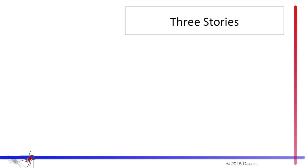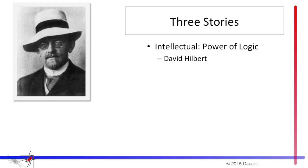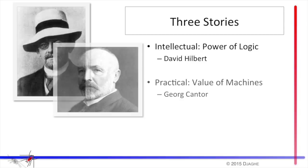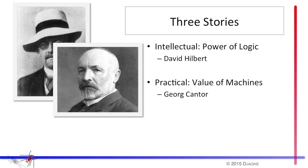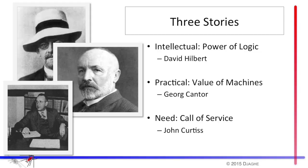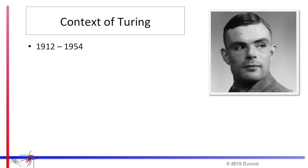The first, the intellectual context, is the power of mathematical logic. And we will look at the story of David Hilbert to understand that. Next, we're going to look at the practical world, the value of machinery. And we're going to look at another mathematician, George Cantor, to help us understand that. And finally, the need, which is really the call of service to help protect and support and defend one's country. And we will look at John Curtis to help us understand that. But of course, our story is really about Alan Turing. And so we need to ground ourselves in his life.